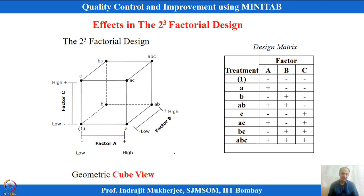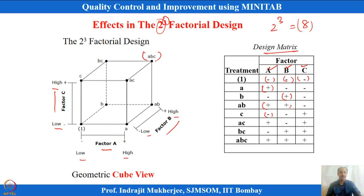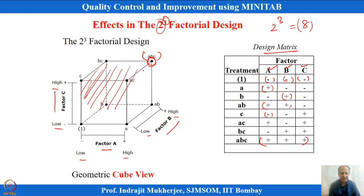Now let us take an example with 3 factors. With 3 factors each at 2 levels — factors A, B, and C — the minimum number of trials is 8 (2-cubed design). The trials cover all combinations of low and high levels. Geometrically, where the 2-factor design was a flat surface (square), the 3-factor design is a cube. We experiment within this cube, which represents the experimental region in 3 dimensions.